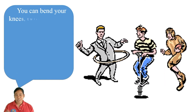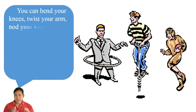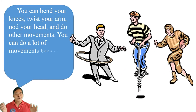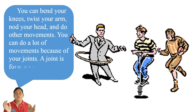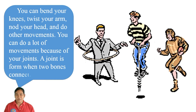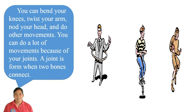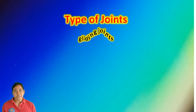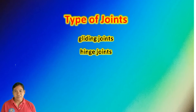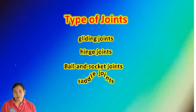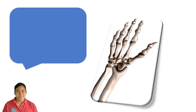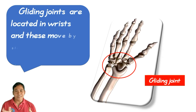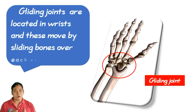You can bend your knees, twist your arm, nod your head, and do other movements. You can do a lot of movements because of your joints. A joint is formed where two bones are connected. Gliding joints are located in the wrist and allow movement by sliding bones over each other.